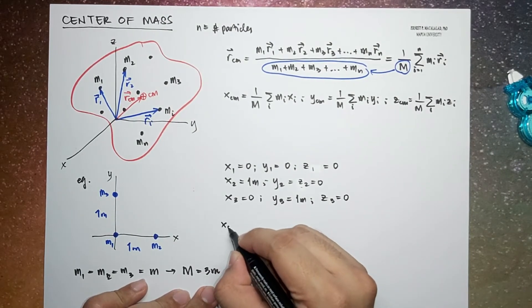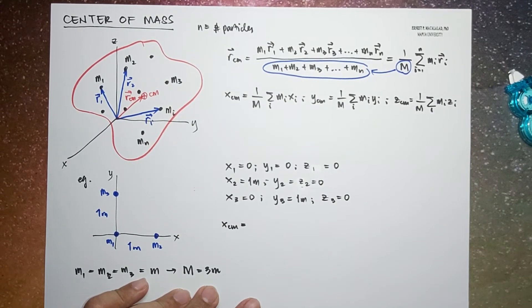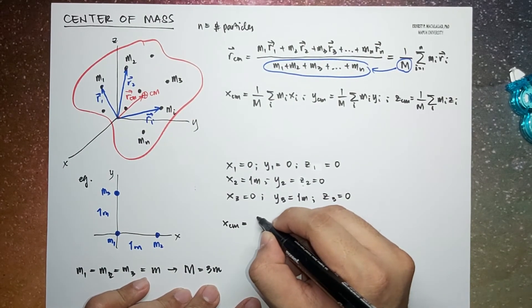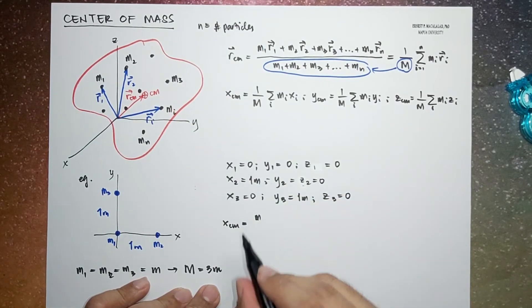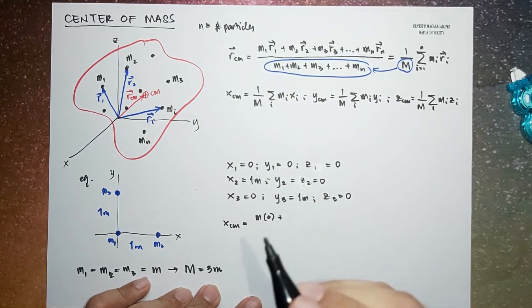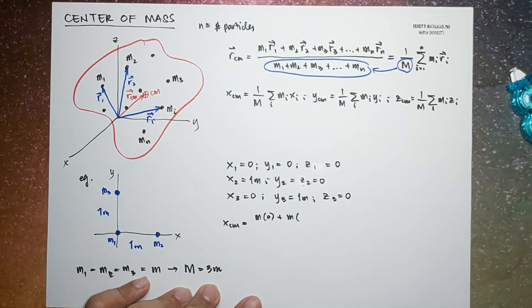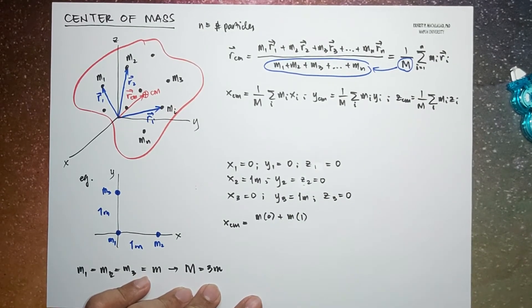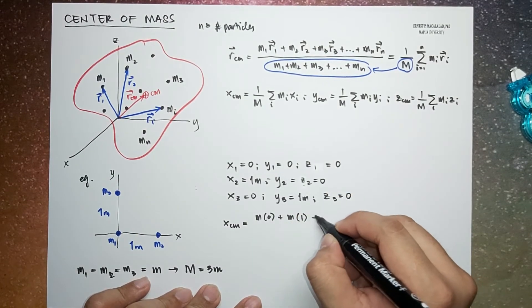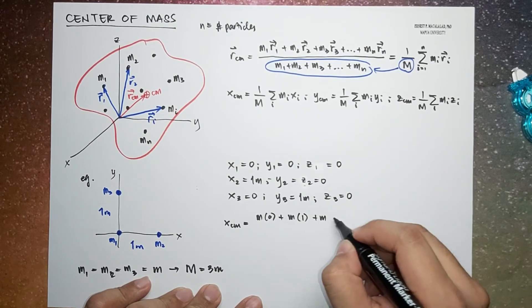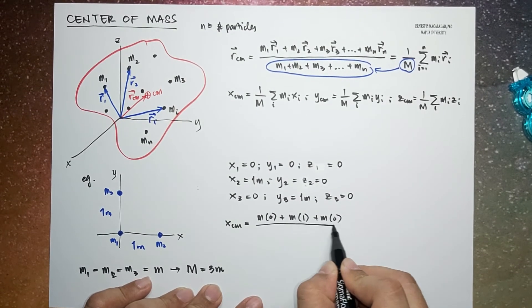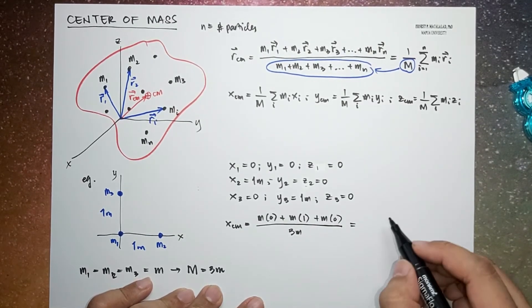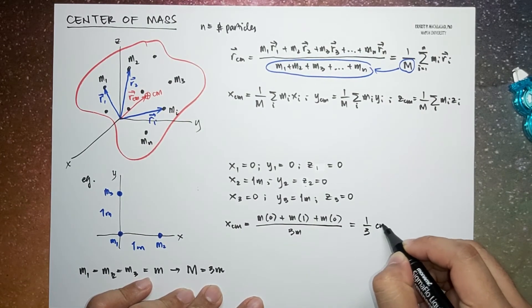So the x-component of the center of mass is: x_cm = [m·(0) + m·(1) + m·(0)] / 3m = m / 3m = 1/3 meter.